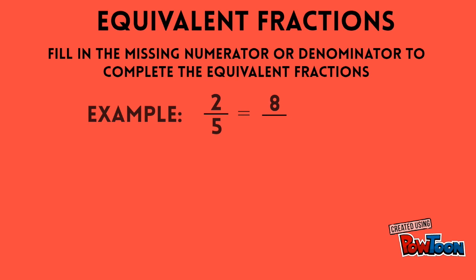For example, here I need to find the missing denominator. To do so, I must first determine how my numerator went from 2 to 8. To get from 2 to 8, I must multiply by 4. And I know to make an equivalent fraction, my numerator and denominator must be multiplied or divided by the same number.